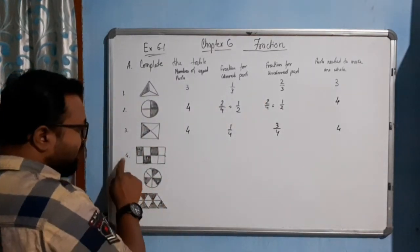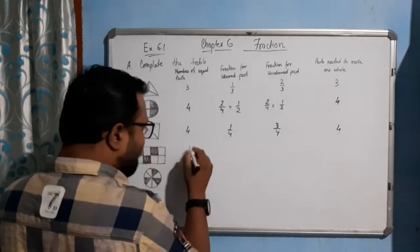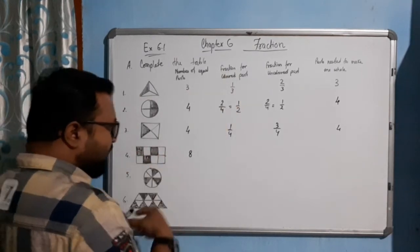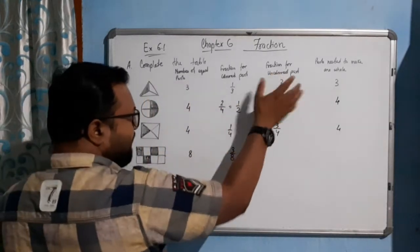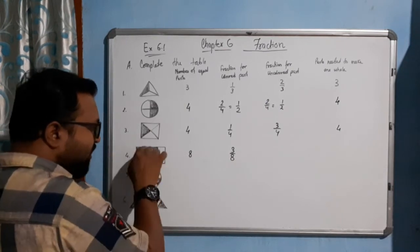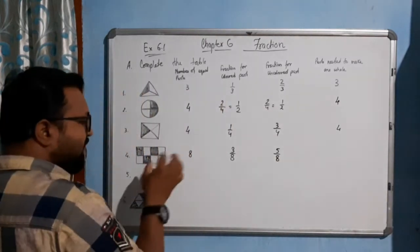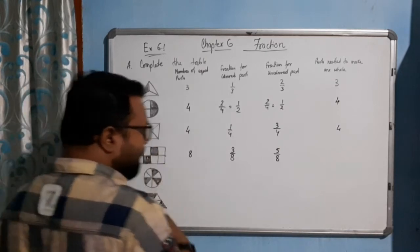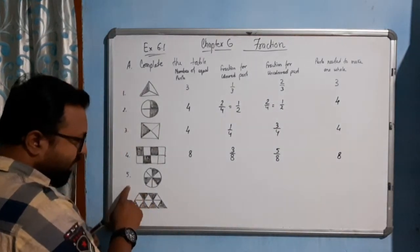Now come to question number 4. How many parts here? 1, 2, 3, 4, 5, 6, 7, 8 — total 8 parts. What is the fraction of colored part? 3 parts out of 8 are colored, so 3/8. What is the fraction of uncolored part? 1, 2, 3, 4, 5 — 5 are uncolored, so 5/8. How many parts are required to make a whole? We need all the parts, so 8.